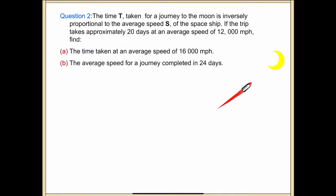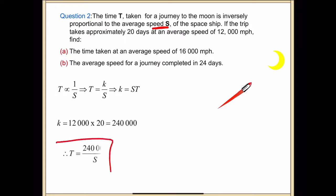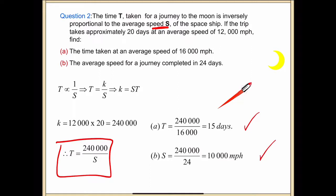Continuing, question 2. Please do not just copy the answer. The time t taken for a journey to the moon is inversely proportional to the average speed. Substitution, relationship in between them. Then work out the other two values. So 15 we've got and 10,000 miles per hour.